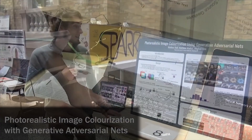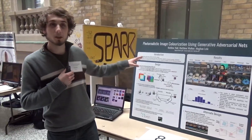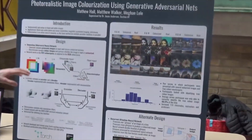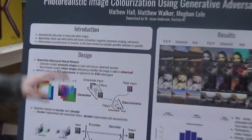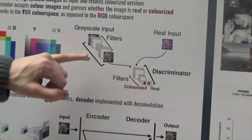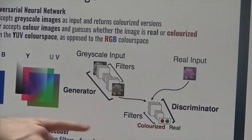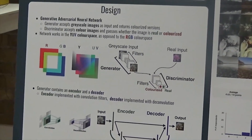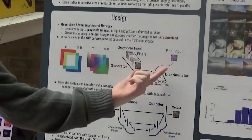Our project is the attempt to recolor black and white images. It has applications in black and white photo restoration, MRI imaging, and astronomy. We also have something called a discriminator in addition to the original generator network. This discriminator acts as an art critic — it asks 'Is this image realistic?' rather than 'Is this exactly the same as the target?'